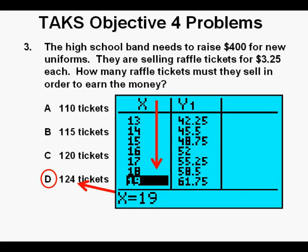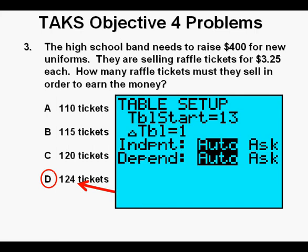But our calculator has a neat feature called table set, which we can get to by pressing the 2nd key, then the window key. This is the table set menu. We can go here with the arrows to change the independent mode to ask instead of auto.